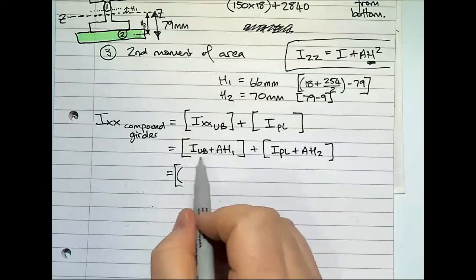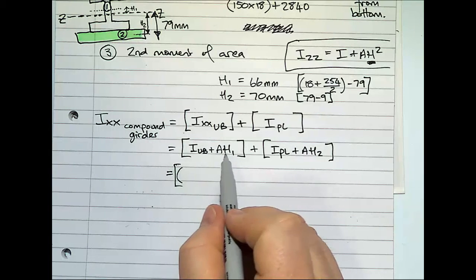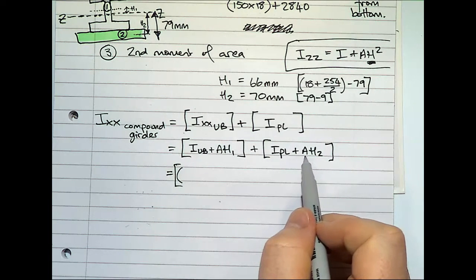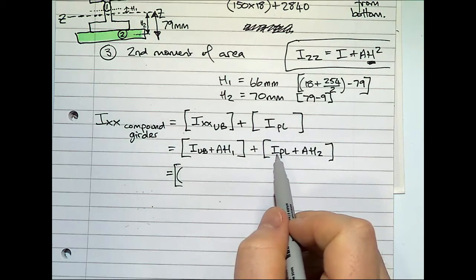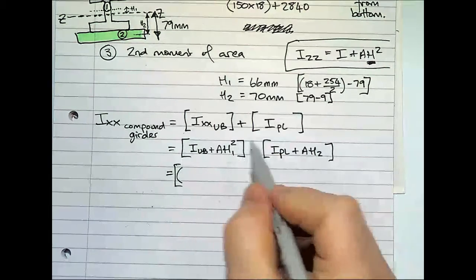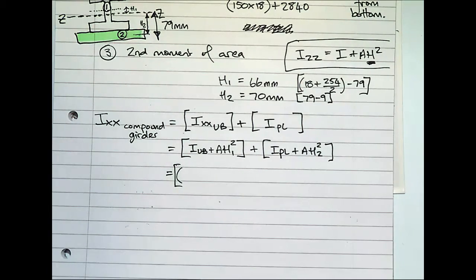And I'll put all the values in for an answer. So when you get your I value from the table, your area from the table, your h1 we've worked out, you've got the area of the plate. Yeah, you can get your I value of the plate. And then the h's are squared.